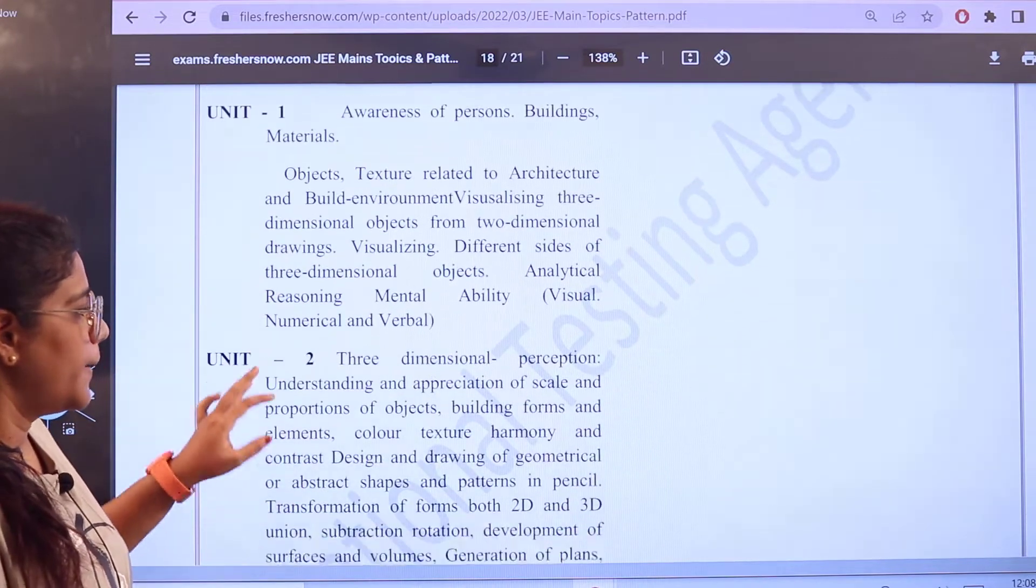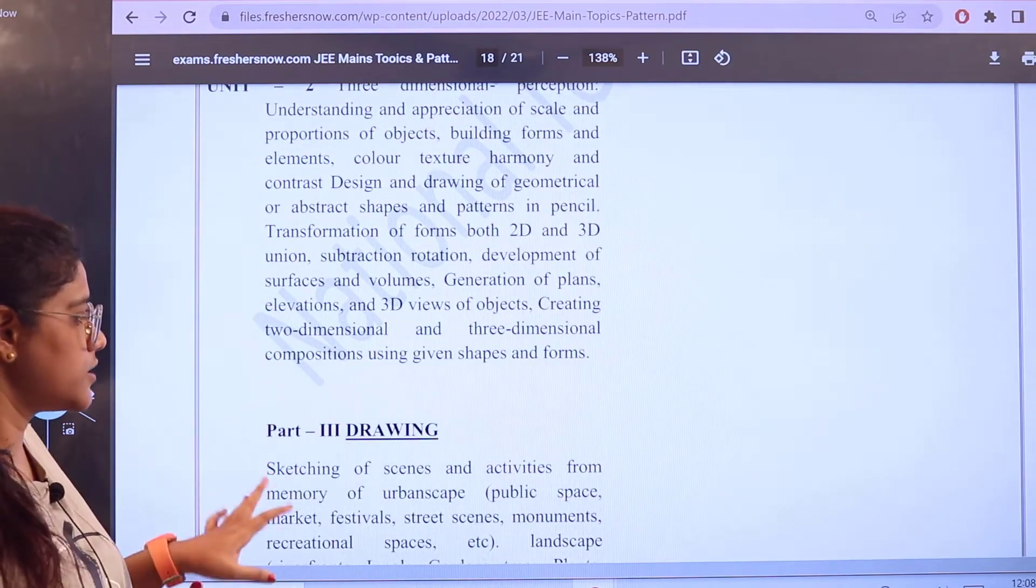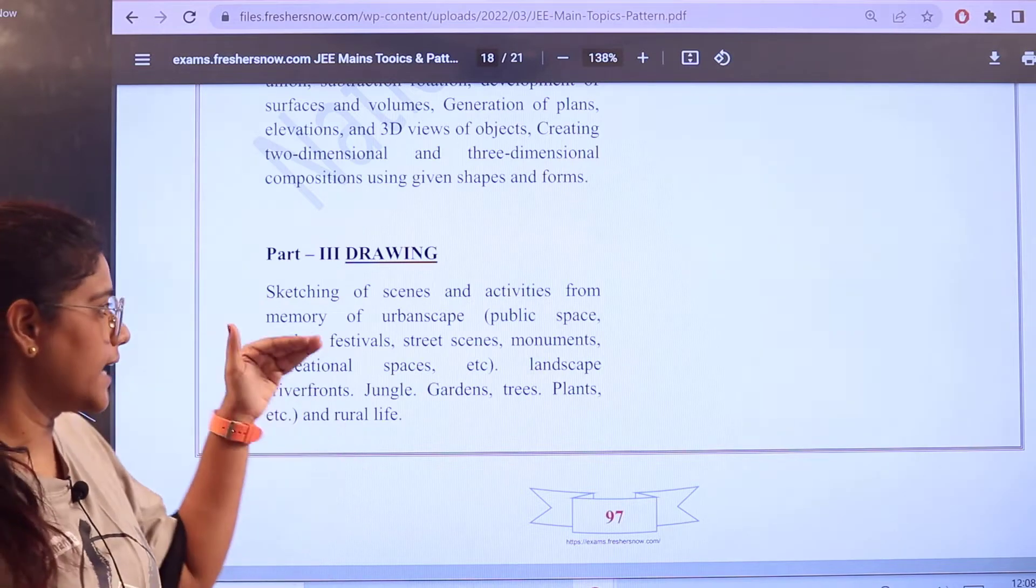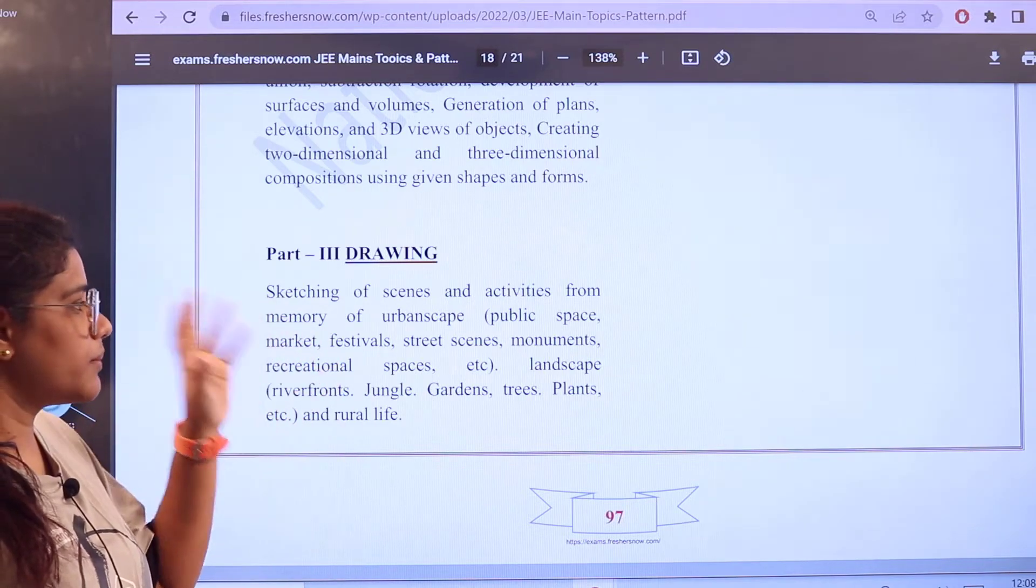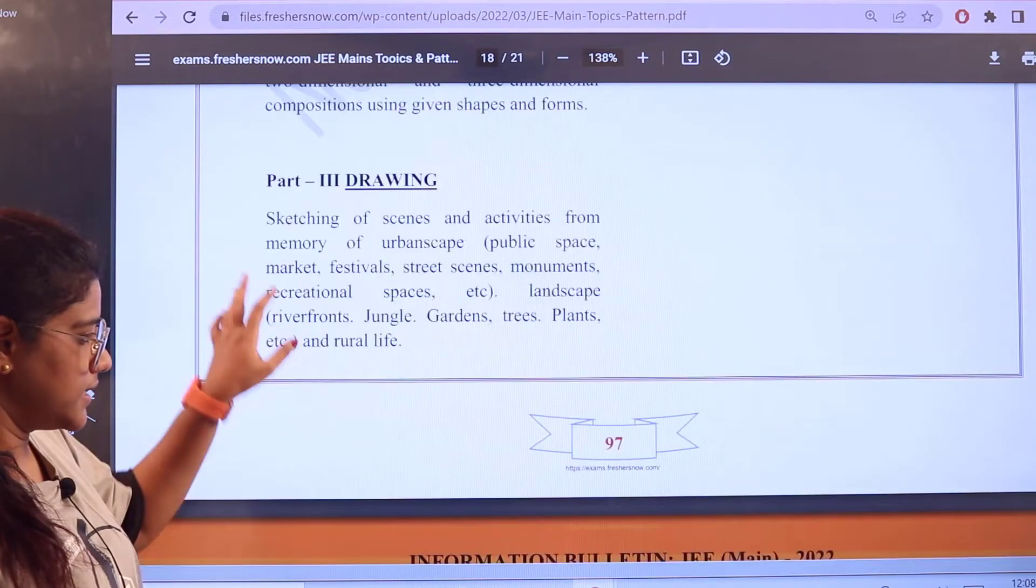For Aptitude you have to be aware of the Three Dimensional Perceptions, the 2D and 3D surfaces. And for Part 3 you have Drawing where you should be focusing on the activities of urban landscapes and public spaces, market festivals, etc., the landscapes and other sketching scenes.